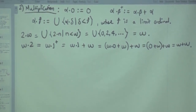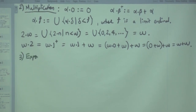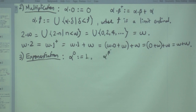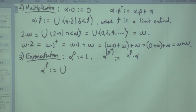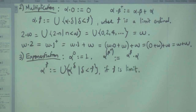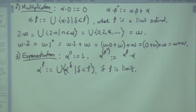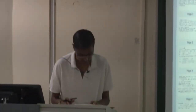Exponentiation follows the same pattern: alpha-to-the-power-0 equals 1; alpha-to-the-power-(beta-plus) equals (alpha-to-the-power-beta)-dot-alpha; and alpha-to-the-power-gamma equals the union of {alpha-to-the-power-delta : delta less than gamma} when gamma is a limit ordinal. We always use the previously defined operation to define the new one.